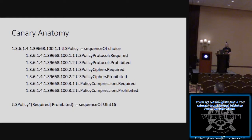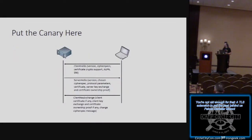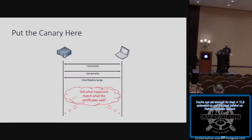The idea is that we can use this assertion, encoded in part of the certificate and signed by the certificate authority's key. When we issue a certificate, we know that the website operator requested this specific certificate with these specific things in it. We put the canary here. There's a client hello packet that sends its version, cipher spec, crypto support, all these things. The server sends back its own version negotiation and cipher spec. Then there's a key exchange. We put the canary at the very bottom, at the end. So after all the negotiation is done, we have an opportunity to say: is what actually happened consistent with the assertions that were made by the site operator and their certificate authority?